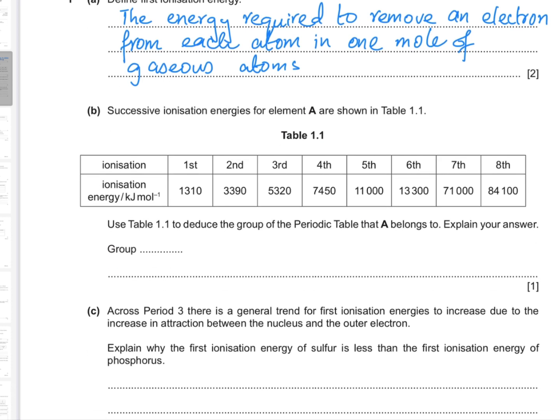Part b: Successive ionization energies for element A are shown in Table 1.1. Use the table to deduce the group of the periodic table that A belongs to and explain your answer. To deduce the group, look at the differences between consecutive ionization energies — first to second, second to third, and so on. The largest difference occurs between the sixth and seventh ionization energies, going from 13,000 to 71,000.